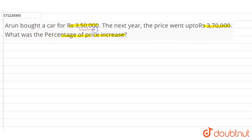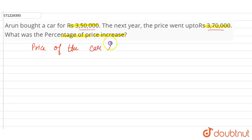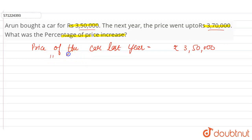It is given that the price of the car last year was rupees 3 lakh 50,000, and the price went up to rupees 3 lakh 70,000. So the price of the car in the current year is rupees 3 lakh 70,000.